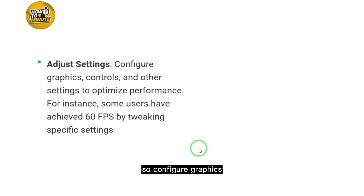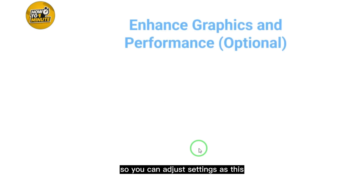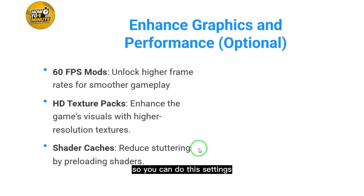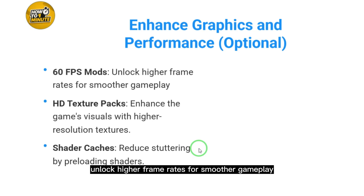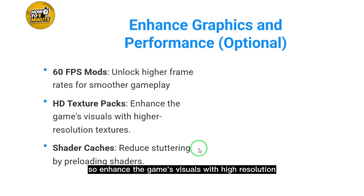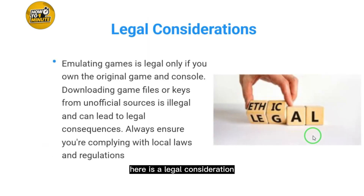Next, adjust settings to optimize performance. Some users have achieved 60 fps by configuring specific settings. Optional enhancements include: 60 fps mode to unlock higher frame rates for smoother gameplay, HD texture packs to enhance the game's visuals with higher resolution textures, and shader caches to reduce stuttering by pre-loading shaders.